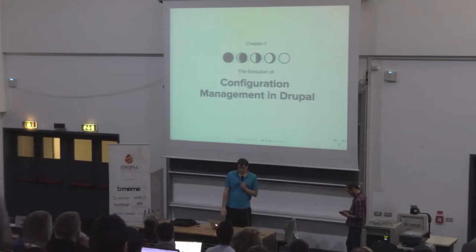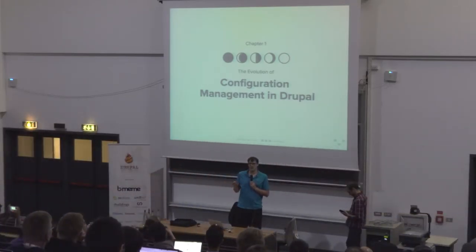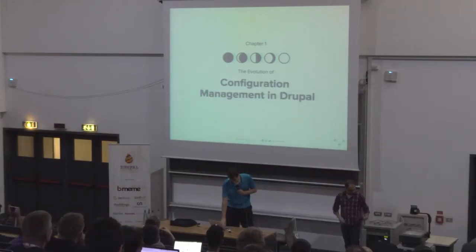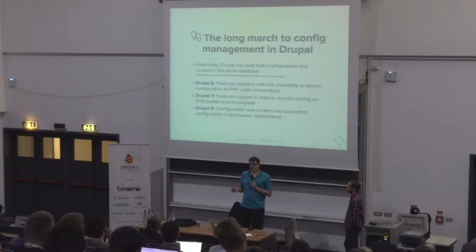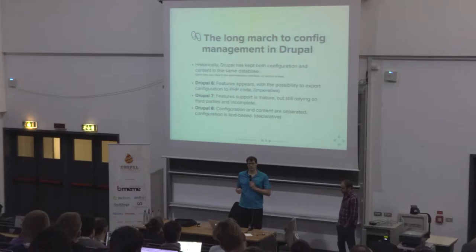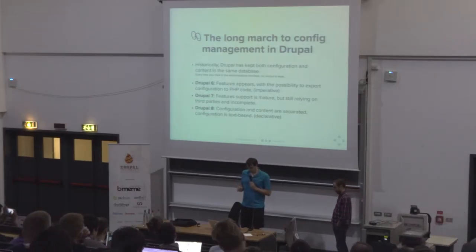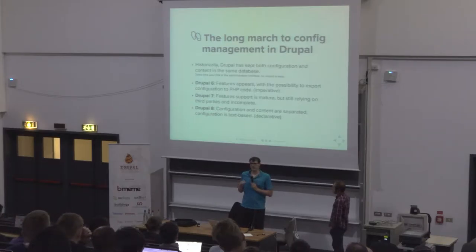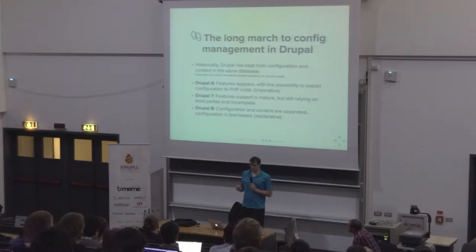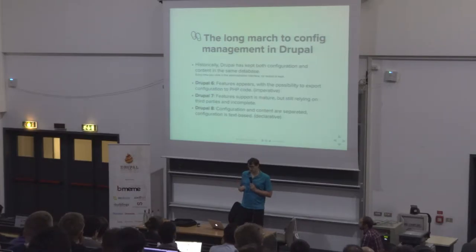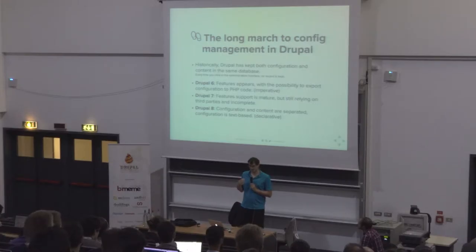The evolution of configuration management — don't worry, this is still the beginning, so that everybody's on the same page, but it will get much more advanced towards the end. Historically, configuration and content are kept in the database. In Drupal 6, the Features module made it possible to export configuration. In Drupal 7, Features was more mature but still imperative — code-based logic. In Drupal 8, configuration and content are clearly separate, and configuration is text-based and declarative.